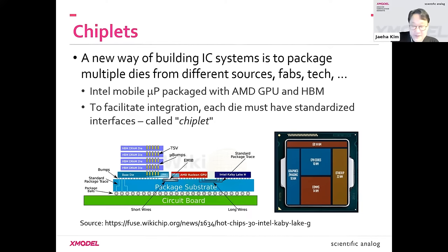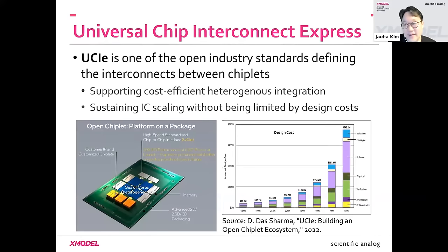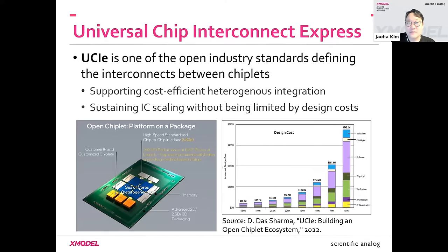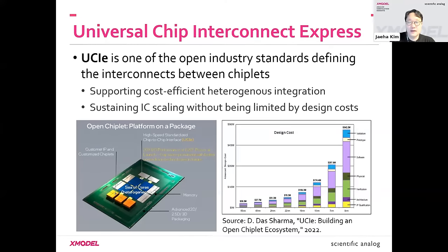The basic motivation behind chiplets is cost. Today, typical ICs have become too complex because Moore's law has been scaling for nearly more than 60 years. The cost of designing any complex chip is very high, and the risk of making mistakes is also very high. To mitigate that cost and risk, we build IC systems in pieces called chiplets, ensuring each works correctly before integrating them into a single package or substrate.